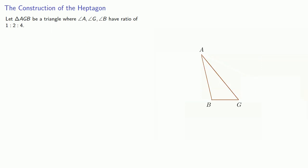Let AGB be a triangle where angles A, G, and B have a ratio of 1 to 2 to 4. Now, we'll extend this base BG so that BE is equal to AB and GD is equal to AG.